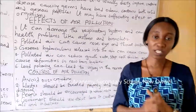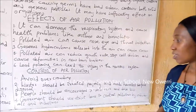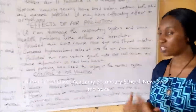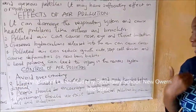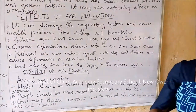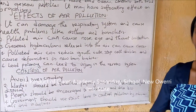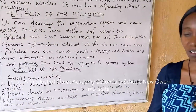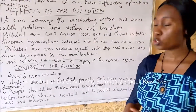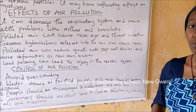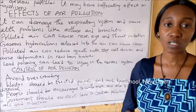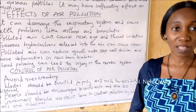Ways of controlling air pollution: first, avoid overcrowding. Second, waste should be treated properly and made harmless before they are disposed. Next, people should be encouraged to walk more and reduce the use of vehicles, which most of the time lead to air pollution. Then, government should use strict laws to control and monitor both individuals and industries against environmental pollution generally.